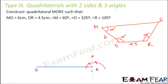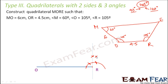Now, how do you draw 105°? Notice that 105° lies exactly between 90° and 120°. So if we draw an angle bisector between 90° and 120°, we get 105°. From the 90° point draw an arc, from the 120° point draw another arc — where these two arcs meet, draw a straight line. That entire angle is 105°. That's how you draw 105° using a compass.